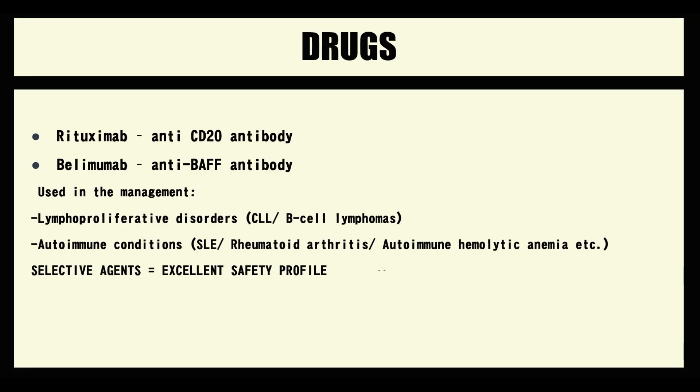Rituximab and Belimumab are two monoclonal antibodies. Rituximab is anti-CD20 antibody and Belimumab is anti-BAFF antibody. We use them in treatment of lymphoproliferative disorders as chronic lymphocytic leukemia or B-cell lymphomas.